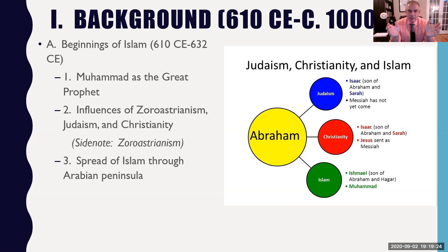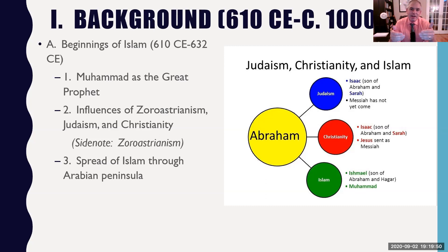Even Islam, Christianity, and Zoroastrianism all have days of reckoning — final moments where people will be judged, the righteous shall be saved, and the wicked will be cast down. There will be punishment and reward at the end of time. So these religions all kind of pop up from the Middle East and have interaction between them.